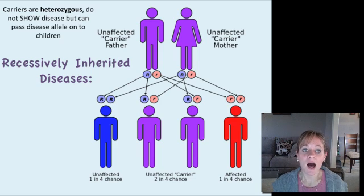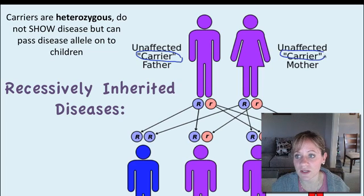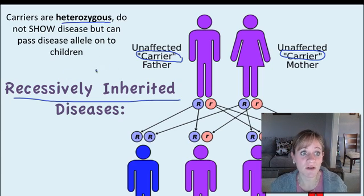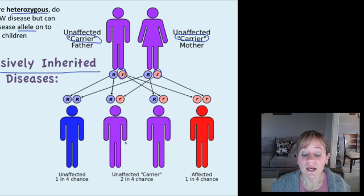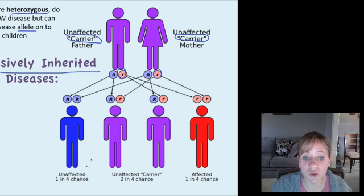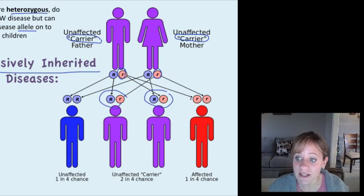Here's an example of a pedigree showing a recessively inherited disease. Both parents are carriers — another important definition. Carriers are heterozygous: with a recessively inherited disease they don't show or have the disease, but they carry the allele and can pass it on. The dad has a little r and the mom has a little r. When they mate, the probabilities are: a one-fourth chance of a totally unaffected (RR) child, a two-fourths chance of carrier (Rr) children, and a one-fourth chance the child will be affected by the disease.